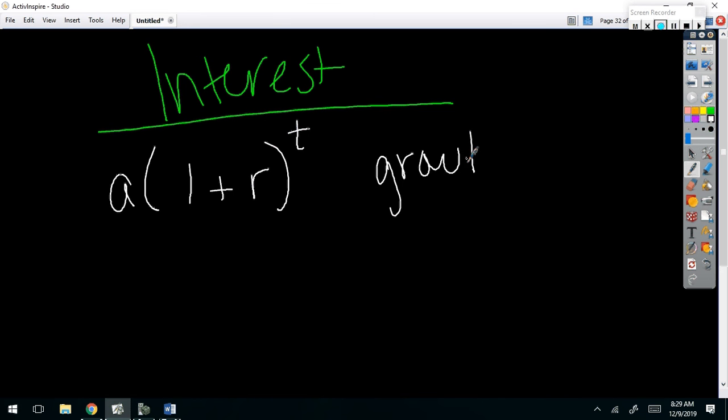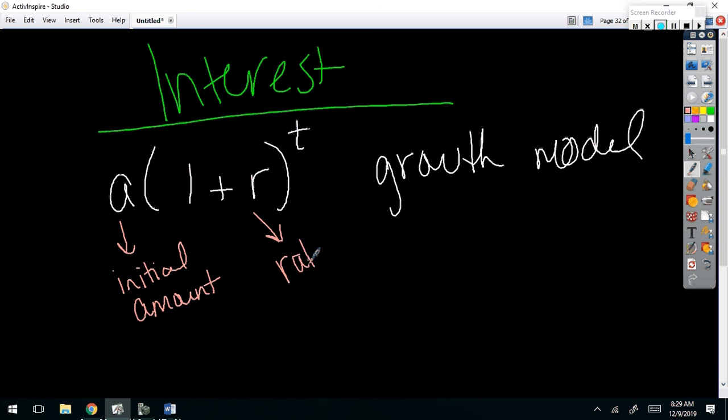All right, so this is what we call a growth model. When something grows exponentially or increases a certain percentage each year, we use this model to represent how much we'll have after T number of years. A is our initial amount. What does initial mean? What you start with. That's right. R is our growth rate as a decimal. So if I wanted to say that it grew 22% each year, what would my R be? 0.22, right? This is if you have a percent, you move the decimal two times to the left to find that percent.